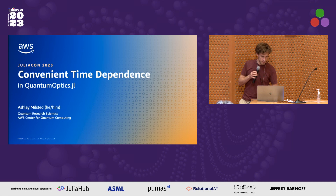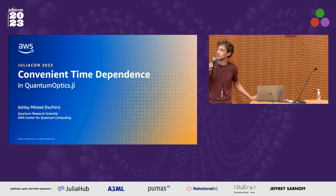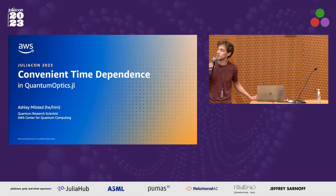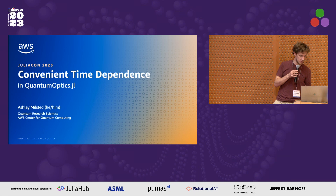I'm going to talk about — the title is 'Convenient Time Dependence in QuantumOptics.jl,' but really this is more of an advertisement for QuantumOptics as a package, and also for the kind of stuff that we are interested in doing at the AWS CQC, and some new features that we added to that package recently.